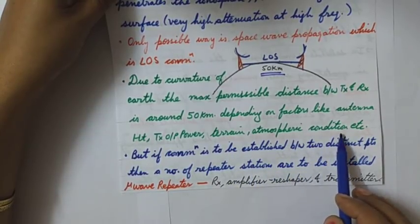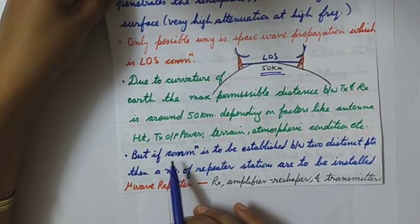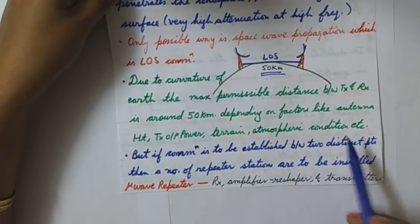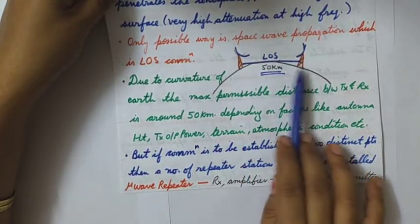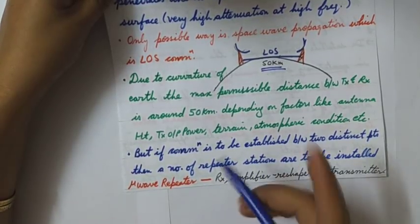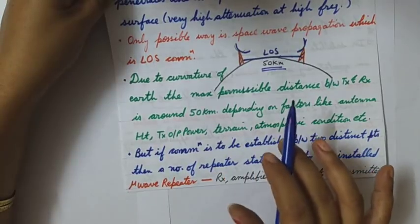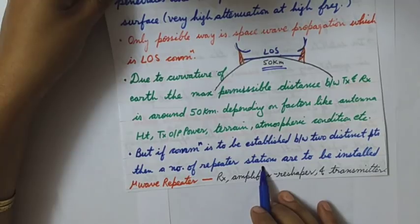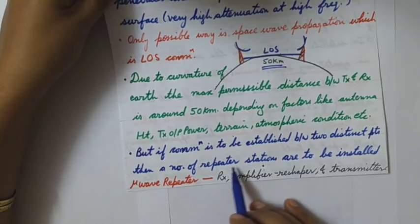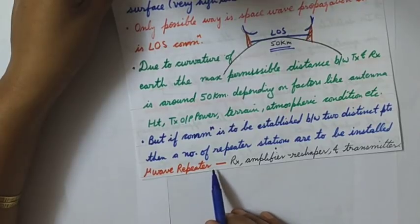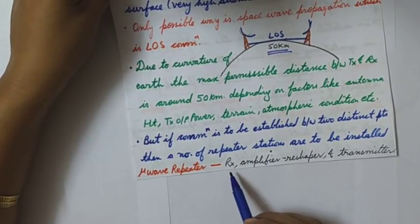Other factors include present atmospheric conditions. But if communication is to be established between two distant points — farther than this 50 km distance — some extra efforts need to be done. So a number of repeater stations are used if you want to communicate between two distant points.